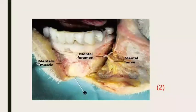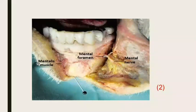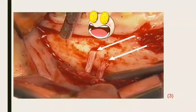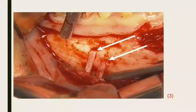You can see in this picture the mental foramen and the mental nerve — you can identify two branches of the mental nerve in this patient. The mental nerve supplies sensory innervation of the skin of the lip and lower chin.